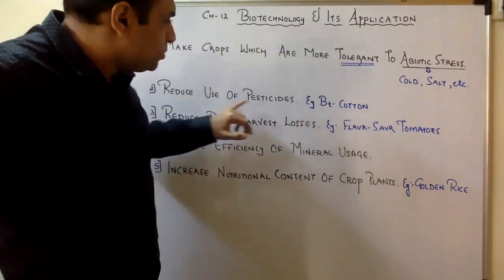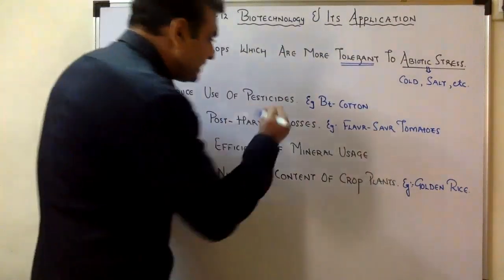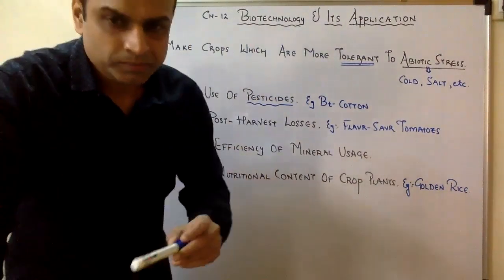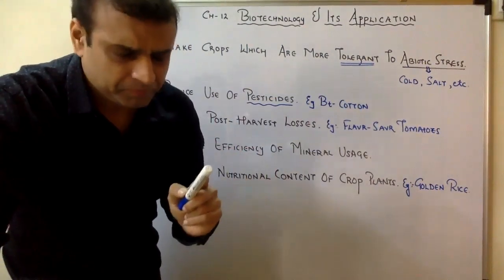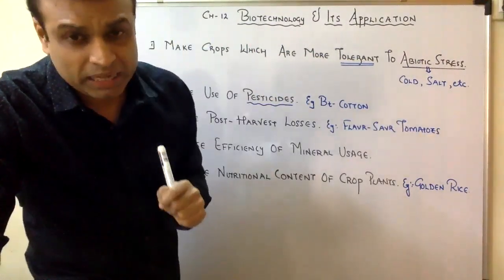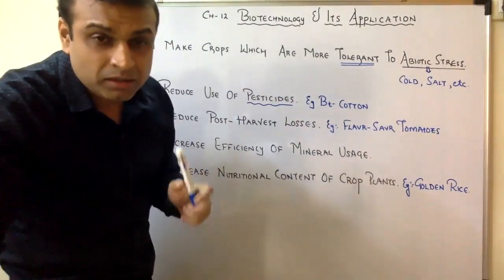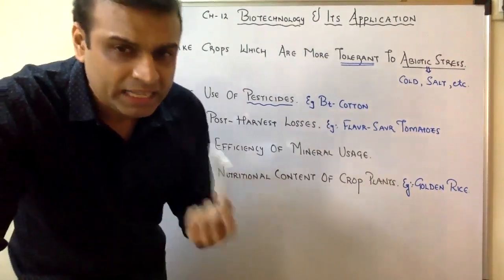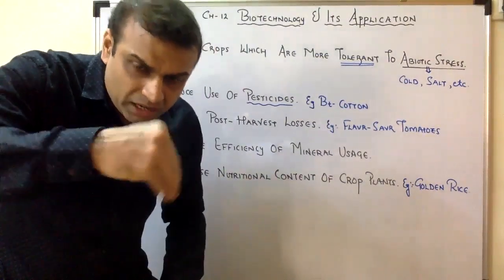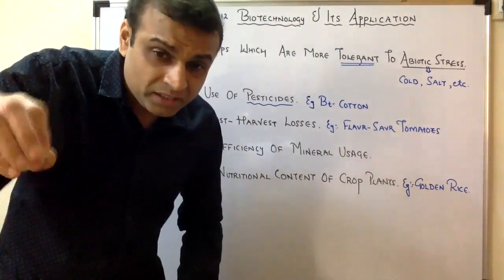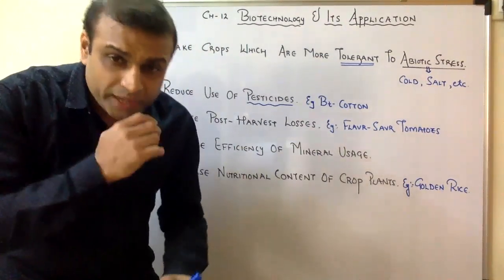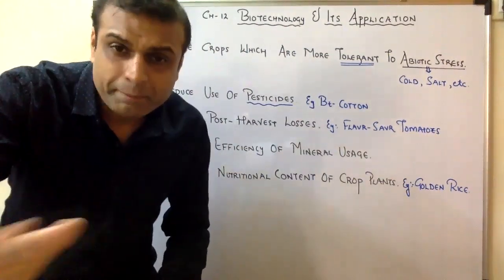The second aim is to reduce the use of pesticides. Pesticides are chemicals we use to kill pests. For example, DDT powder was used to kill pests by spraying it on crops. But the problem is that DDT is not biodegradable — it mixes into the groundwater and soil, causing marine life to die. We call this biomagnification. As a result, the government has banned DDT, and so we need to use fewer pesticides.